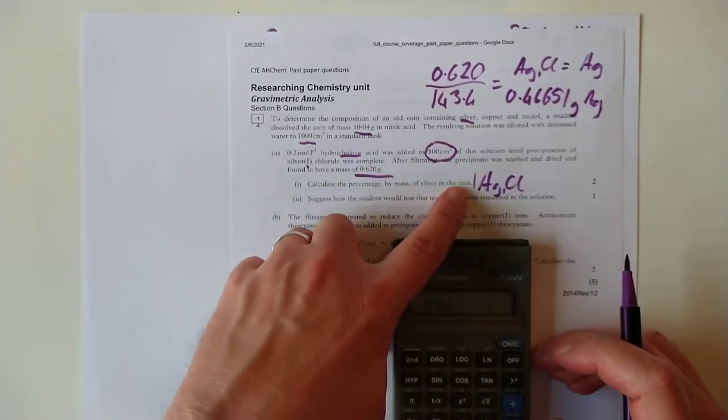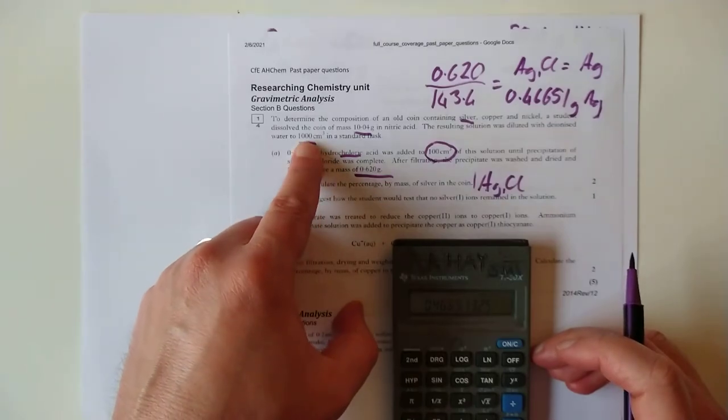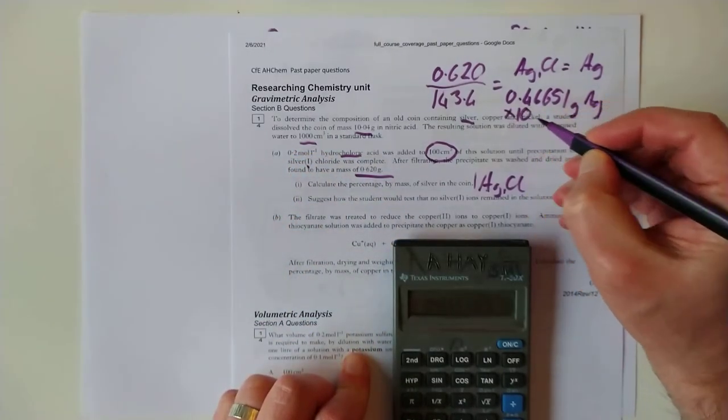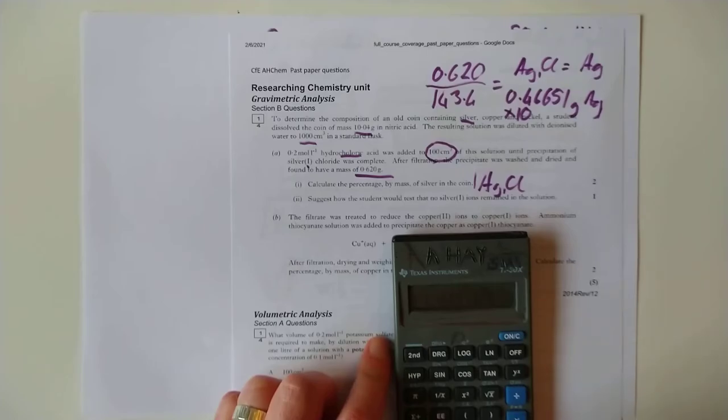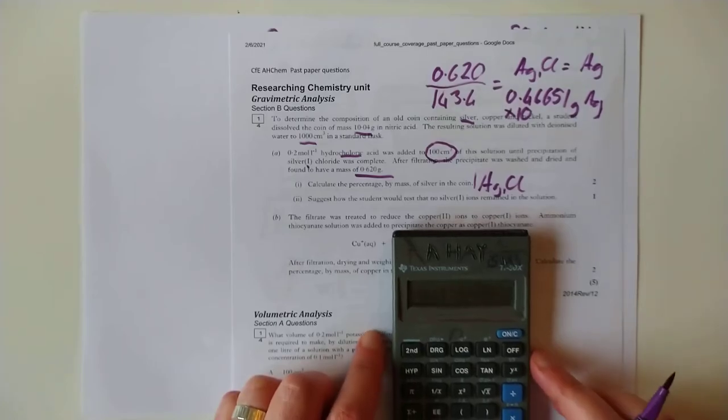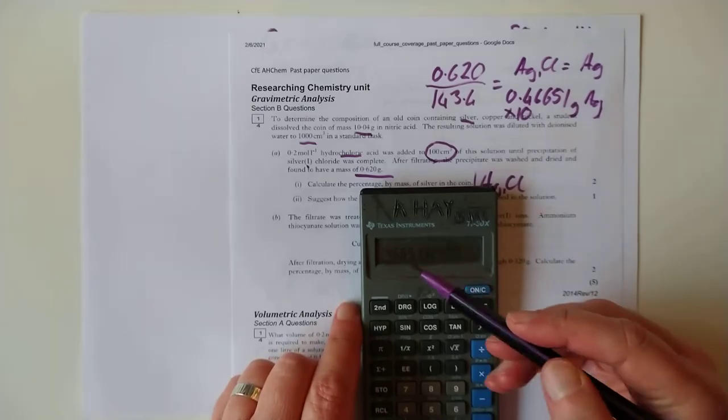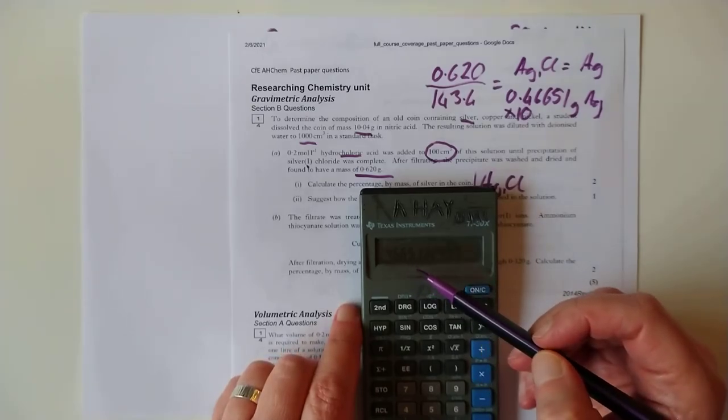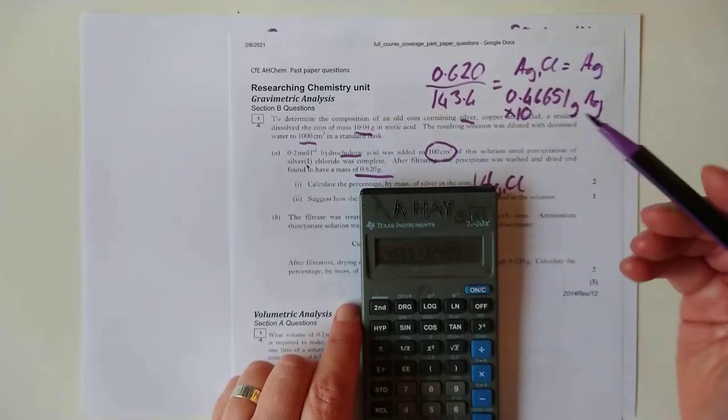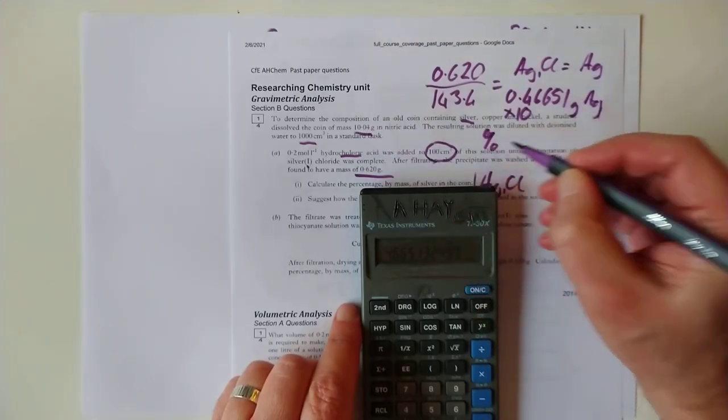In a 100ml sample? Ah! And I'll bet they want, yes, they want the mass in the original coin, which was originally in 1,000ml. So let's just shift that up by a power of 10. Isn't that sneaky?